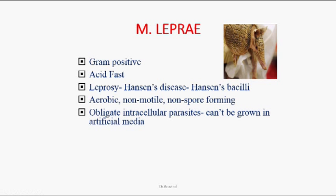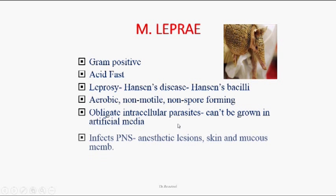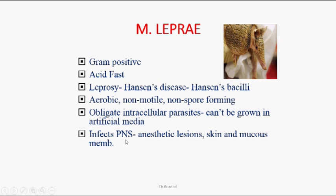They won't grow in artificial medium — they always grow in host cells. These organisms infect peripheral neurons, especially Schwann cells, which can lead to peripheral neuritis. We can see anesthetic lesions and loss of sensation in those areas. These organisms can also infect skin and mucous membranes.